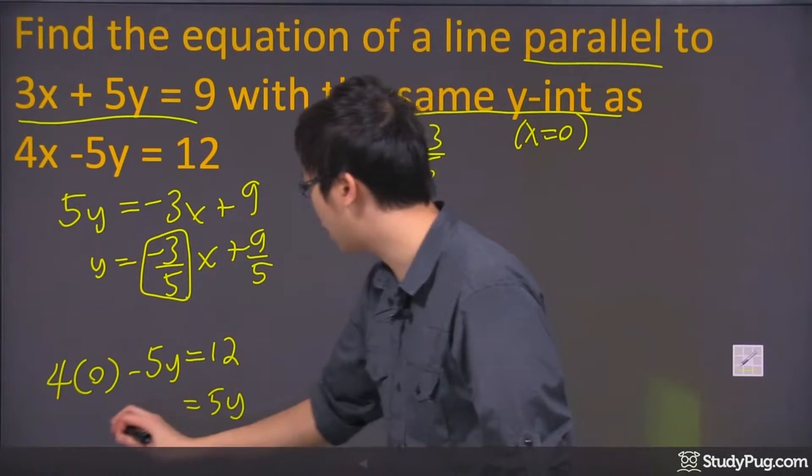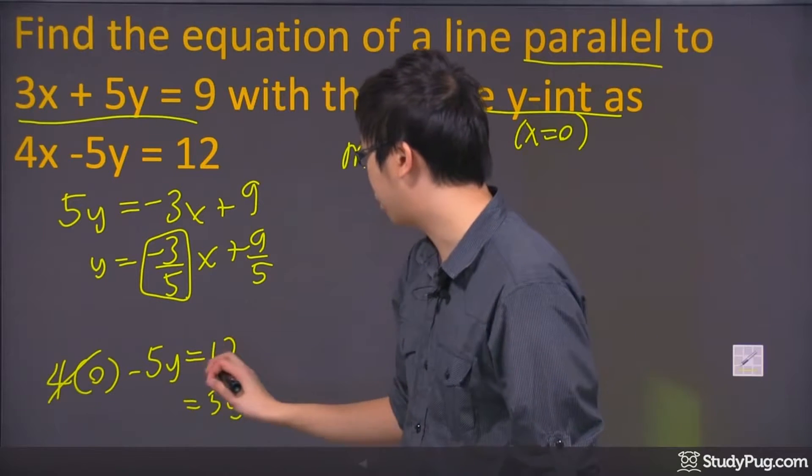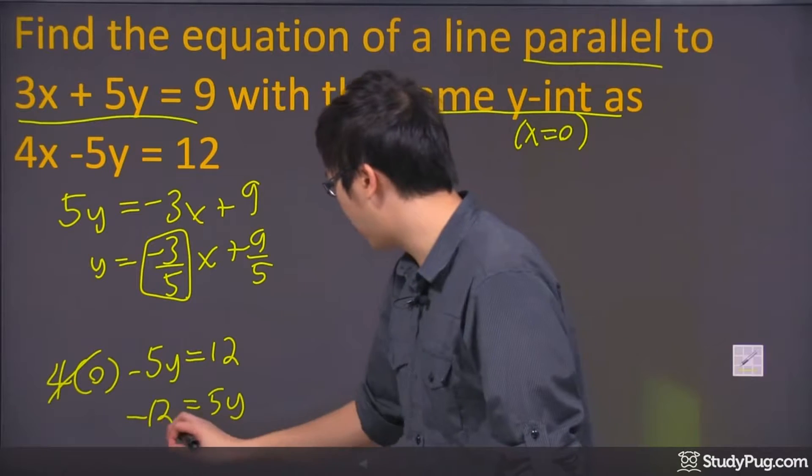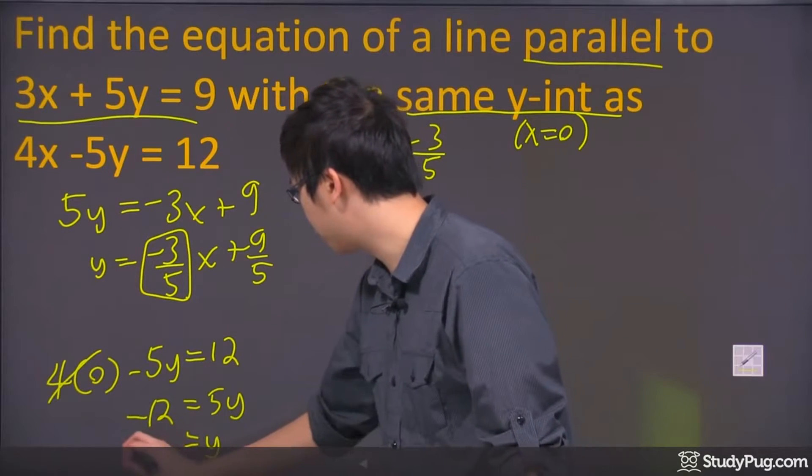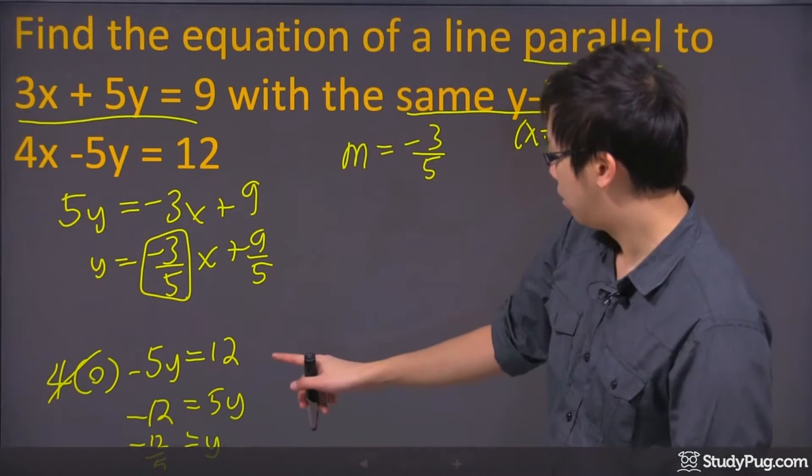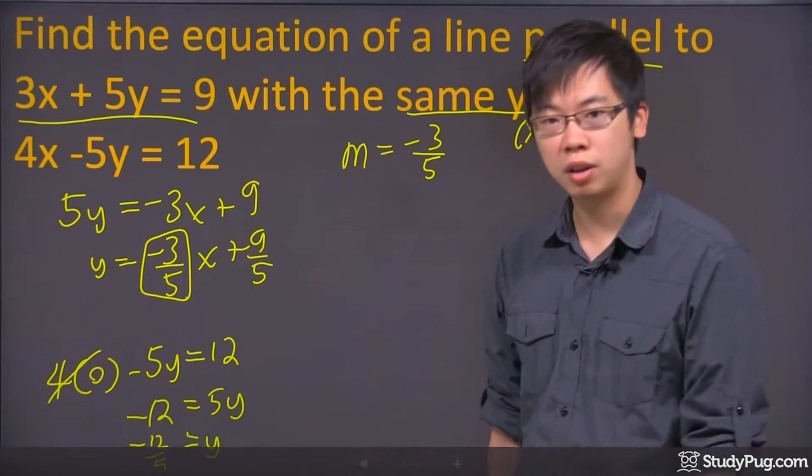So I'm going to move the 5y to this side. That's a 0. Actually, move the 12 over. Oh, we actually don't have to do that. So you're going to divide by 5 to both sides. So it would be negative 12 over 5 is the y-intercept. Hopefully I did the math correctly. Yes, it's 12 over negative 5.